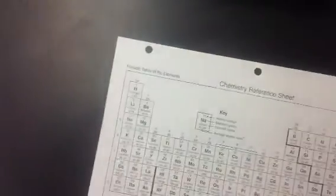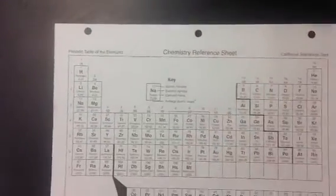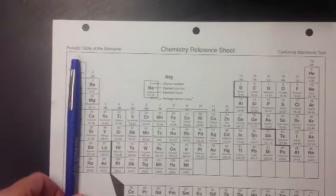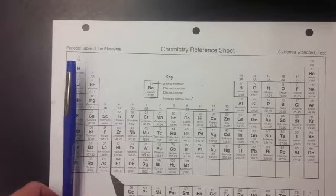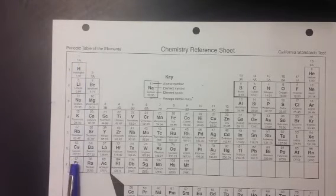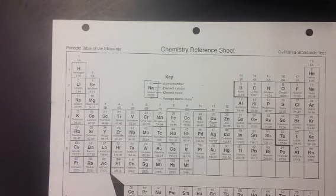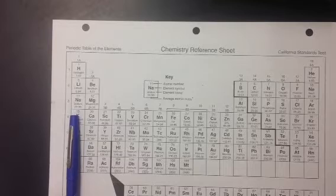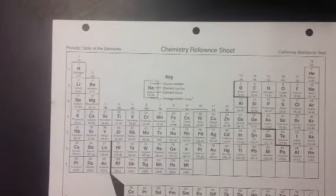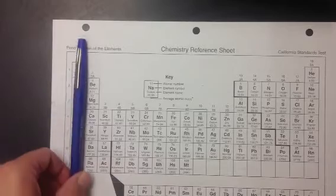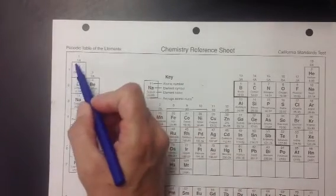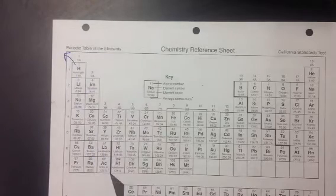So if we look at our periodic table, and we look at our group one elements, the alkali metals, because they're in group one, they only have one valence electron. So in order to fulfill the octet rule, they have two options. They could lose the one electron, or they could gain seven electrons. Well, it's a lot easier to lose the one electron than to gain seven. So the alkali metals are going to want to lose their electrons in order to fulfill the octet rule.